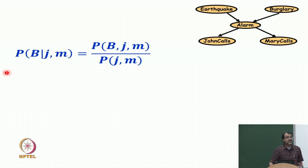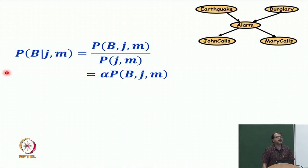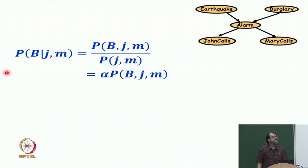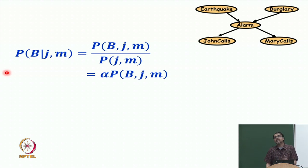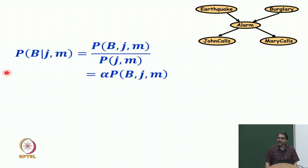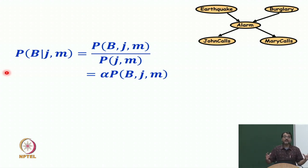This is the important step — going back to the joint distribution idea. There are all these numbers and I am interested in a query. There are hidden variables whose values are unspecified; we go to all the numbers where those hidden variables are in some configuration and we add them all up. That gives me the probability of what I was interested in. This is also called marginalizing the hidden variable, or summing over the hidden variables.